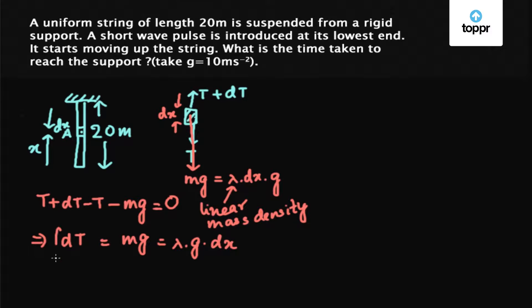Now integrating on both sides, we get from 0 to T, 0 to x. We get T equals lambda g into x. So the tension acting on this element comes out to be T equals lambda into g into x.